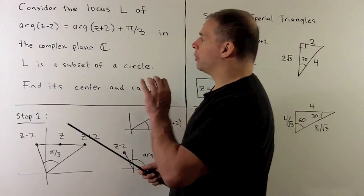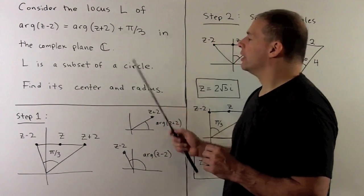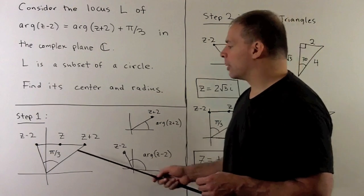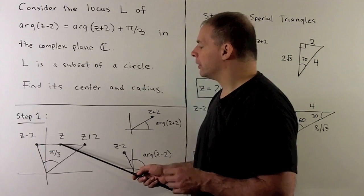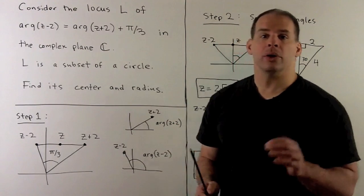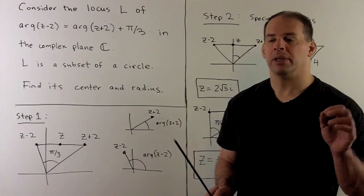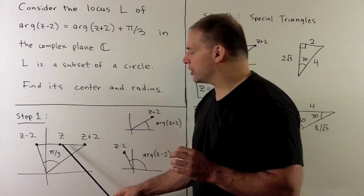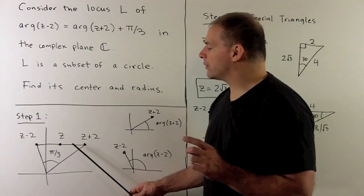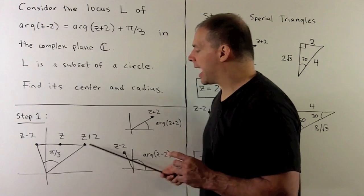I don't know anything special about this equation, so I'm just going to pick a z in the complex plane and draw the picture. I need z plus 2 and z minus 2. For z plus 2, we're adding 2 to the real part of z, so we start at z and go right by 2. For z minus 2, we go left by 2. Then I'll connect the dots.